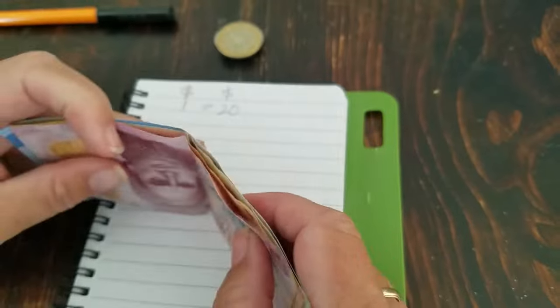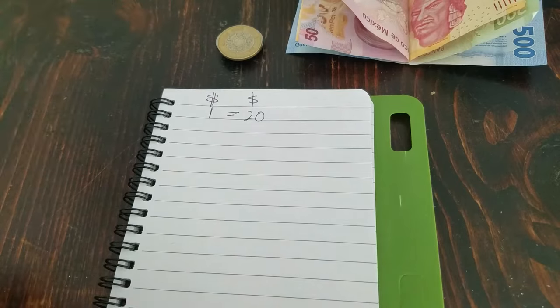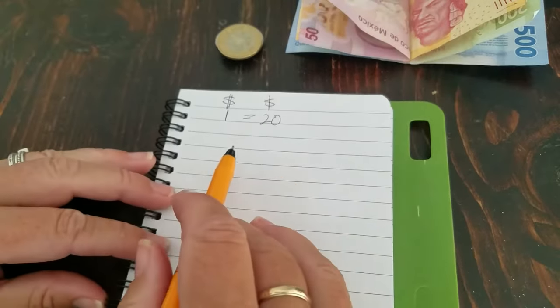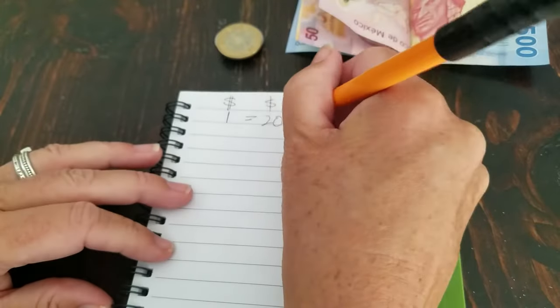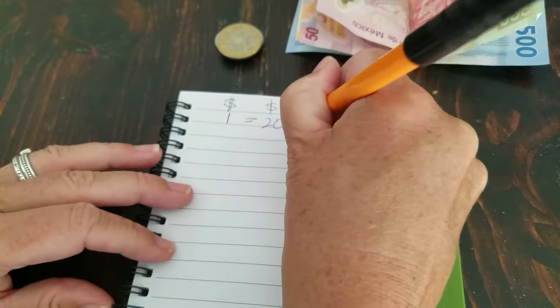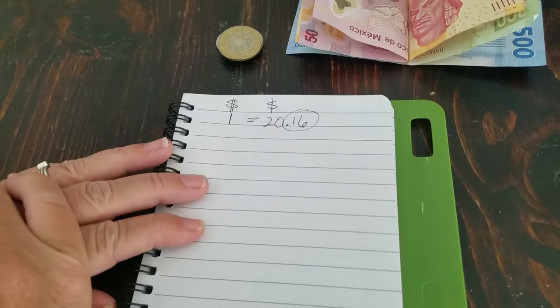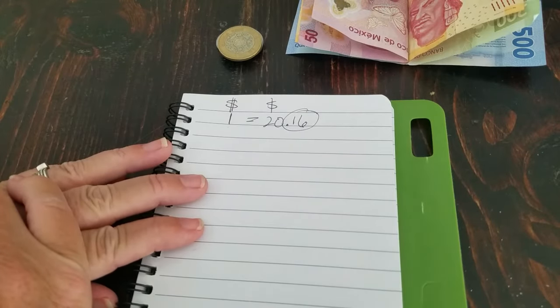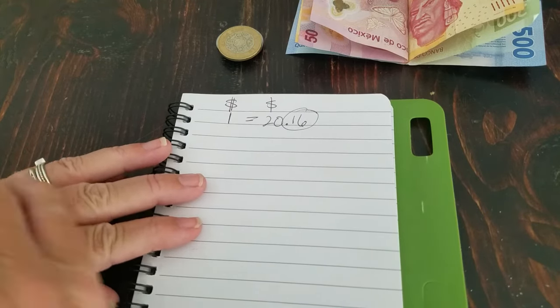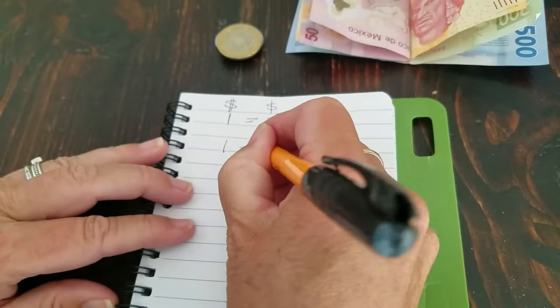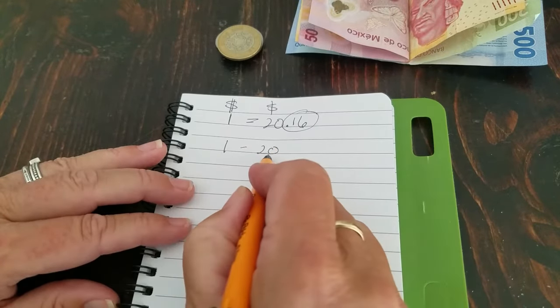If you want an exact conversion, you're going to want to go ahead and get yourself a calculator or a cheat sheet. And the reason why I say that is because today one US dollar is worth 20.16 pesos. So trying to do division with a .16 is very difficult in your head, so we're just going to forget about it. We're just going to do a 1 to 20. So 1 US dollar to 20 pesos.